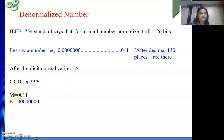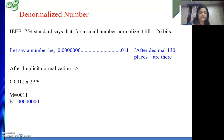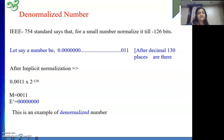So M will be 0011. And E' is written as all zeros — not one — because this is not a normalized number. In IEEE we represent normalized numbers, so to indicate this is not a normal number, since I do not have 1.something but rather 0.0011, E' is not represented as plus one but as all 00. Whenever we see E' is all 00 but M is not 0, we understand it is a denormalized number.